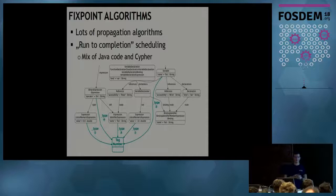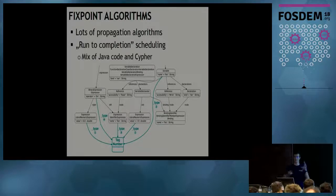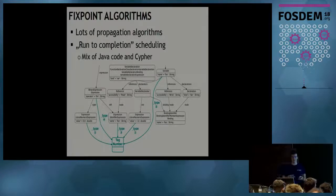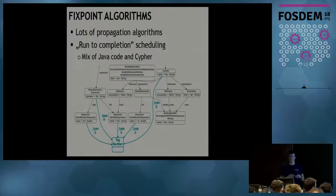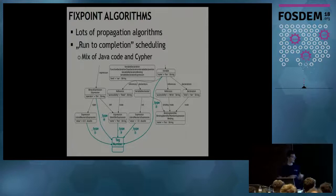Once we have this, we implement the algorithms. We have propagation algorithms to propagate properties — like type information or whether a value can be zero — along the graph. This is called run-to-completion scheduling: we give a set of transformation rules to the system and ask it to execute until there are no more changes. This is quite difficult to do in plain Cypher, so we use a mix of Java code and Cypher — the Java code does the propagations while it can.